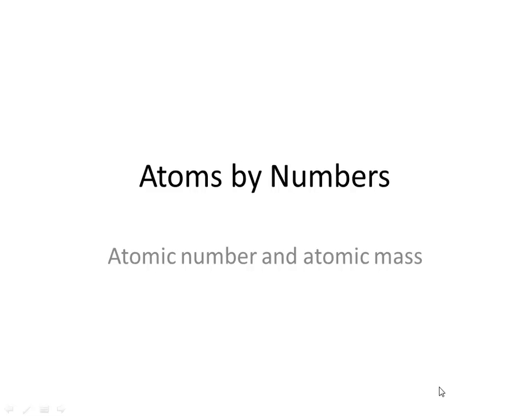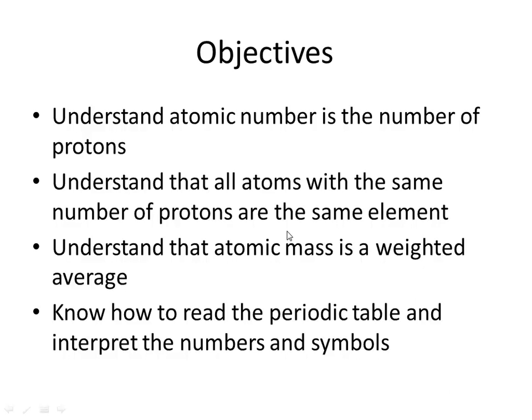Atoms by numbers — we're going to be talking about what the different things are in the periodic table and how they developed. We should understand that atomic number is the number of protons, and that all atoms with the same number of protons are the same element. We should know that atomic mass is an average mass of an element, and we should be able to look at the periodic table and interpret the symbols and numbers.